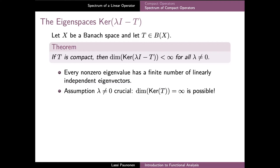As our first result, if T is a compact operator and lambda is a nonzero complex number such that lambda I minus T is not injective, then the dimension of the kernel of lambda I minus T is always finite dimensional. This immediately implies that any nonzero eigenvalue of T can have at most a finite number of linearly independent eigenvectors. The assumption that lambda is nonzero is quite crucial, and it is possible that a compact operator has an infinite number of linearly independent eigenvectors corresponding to the zero eigenvalue.